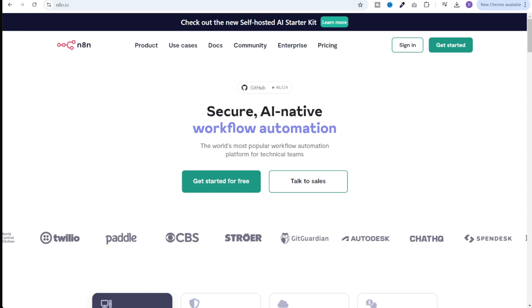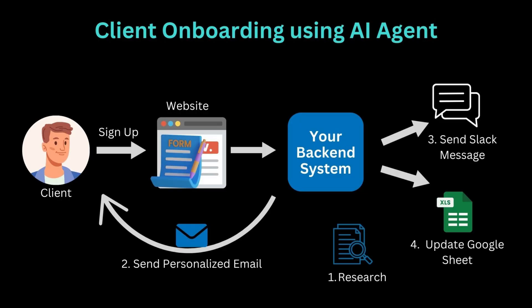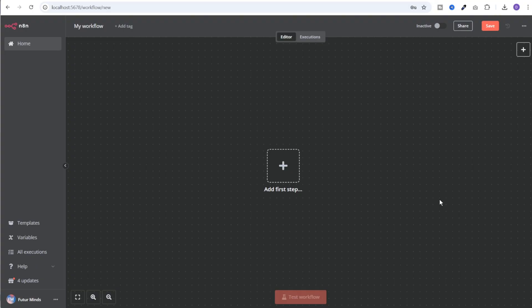Let's understand this by building a simple workflow in n8n — an open source workflow automation tool that integrates beautifully with AI functionalities. Let's say you provide marketing services and have a detailed form on your website that clients fill in to get started. When they submit the form, you want to: first, perform detailed research on their business and competitors and generate a report; second, send a personalized welcome email with the report to the client; third, share the report to an employee via Slack; and fourth, update the client's details, start date, and plan in a Google Sheet. This is a real-world use case — let's build it.